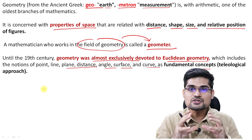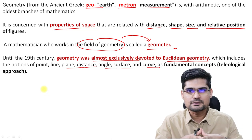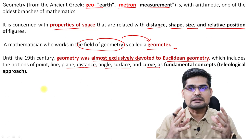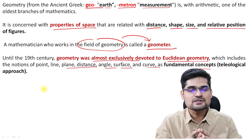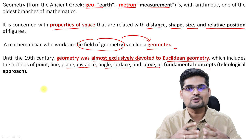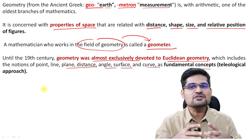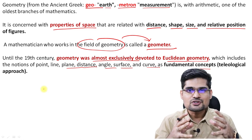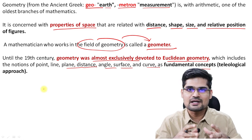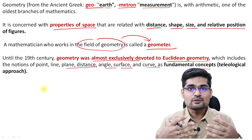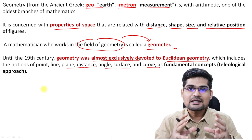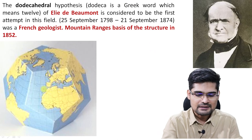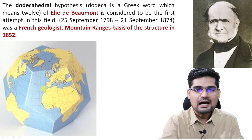Geometry became one of the important principles whenever we talk about the distribution and shape of the earth — in terms of oceans, land, mountains, plateaus, and plains. That's why in geomorphology, Lothian Green's tetrahedral hypothesis, which is now obsolete, became important pioneer work. Let's elaborate on how it came into being.